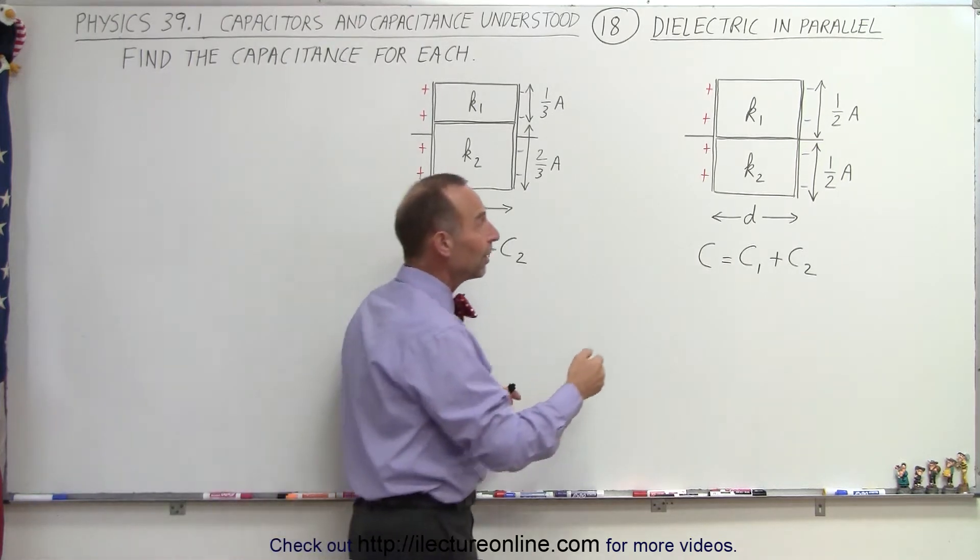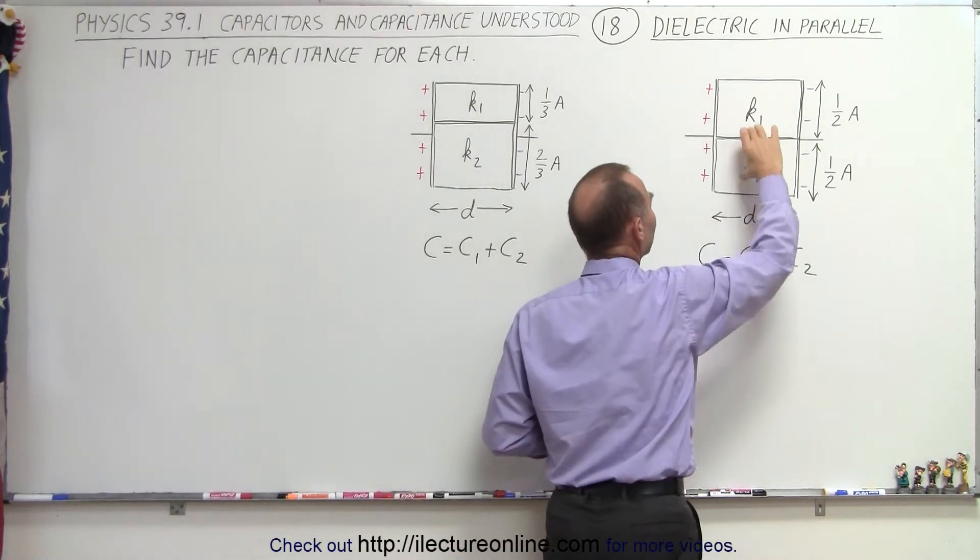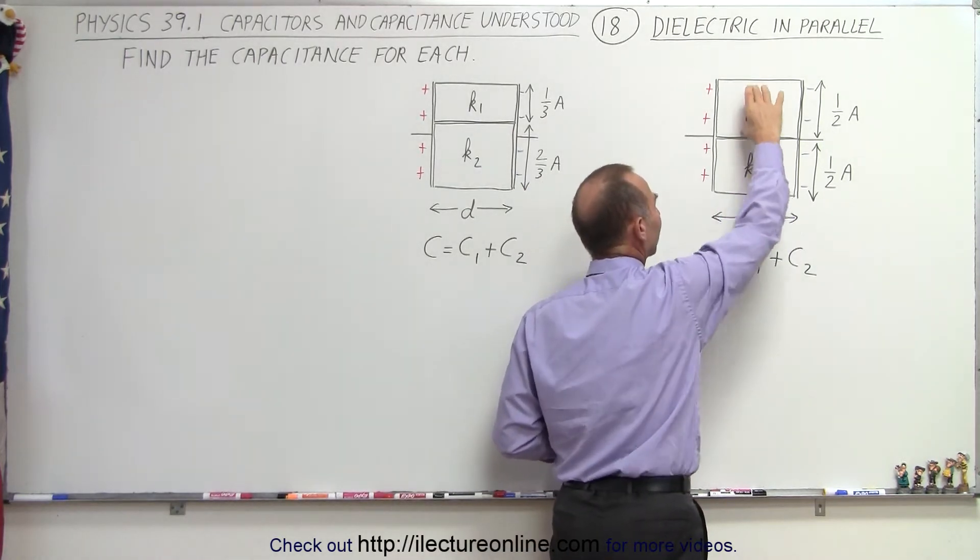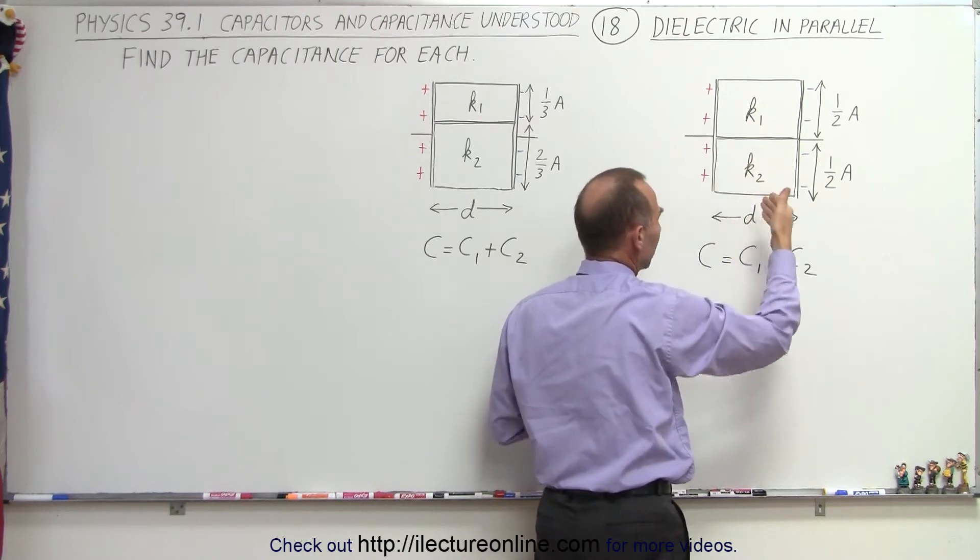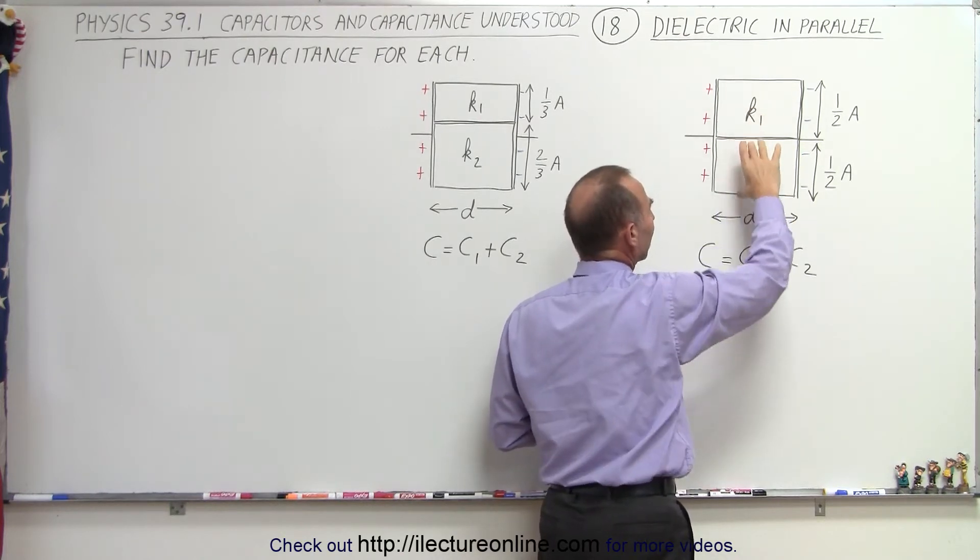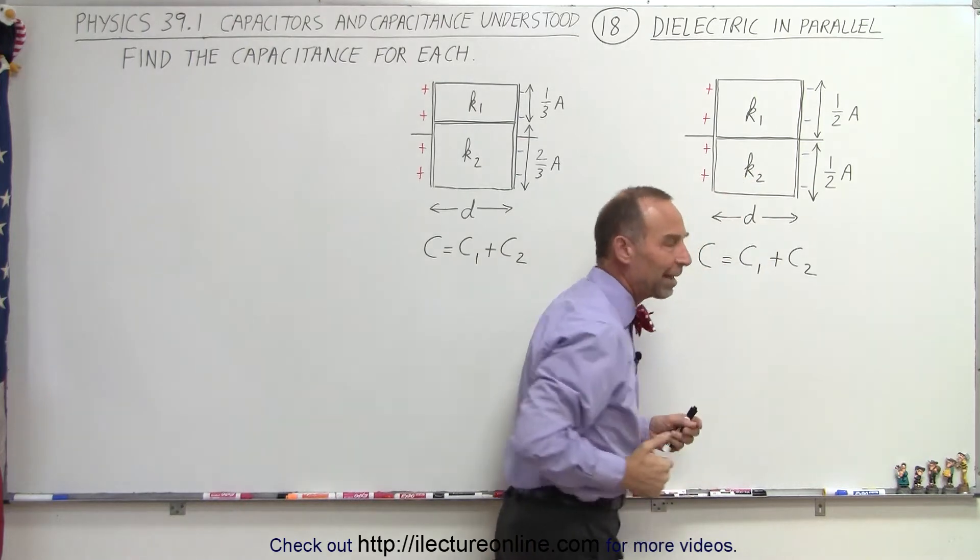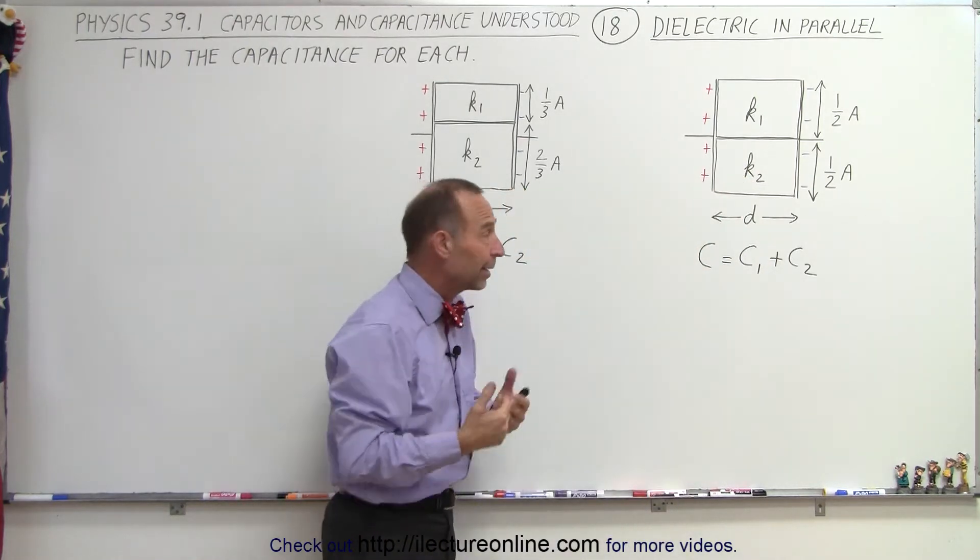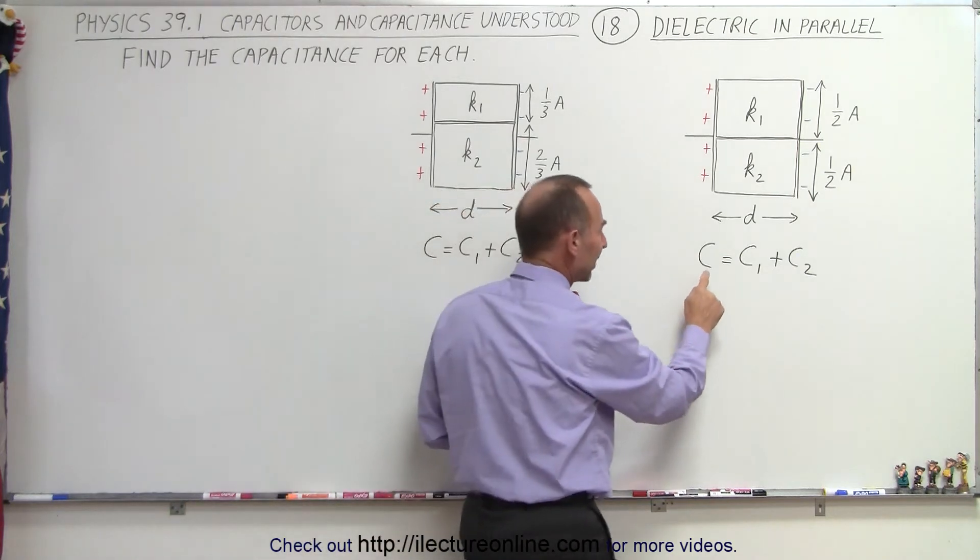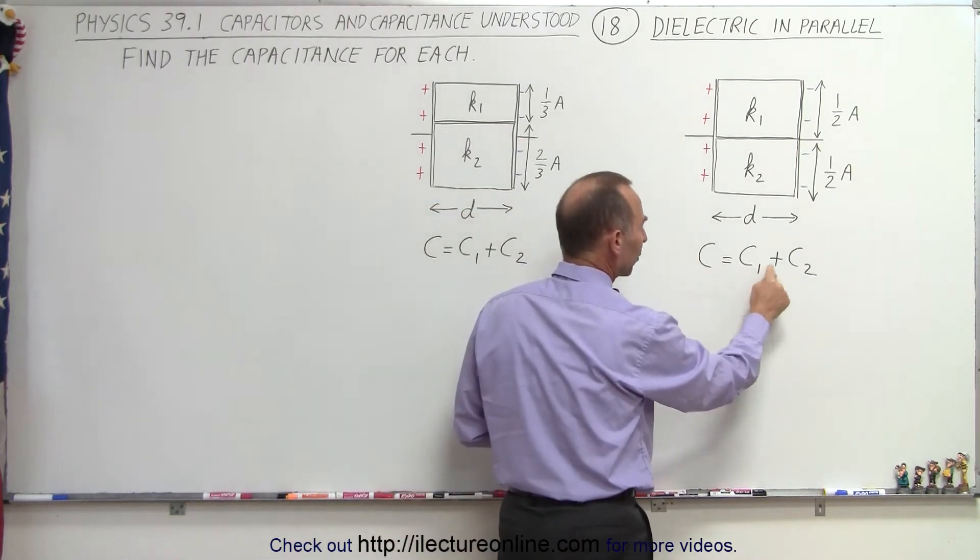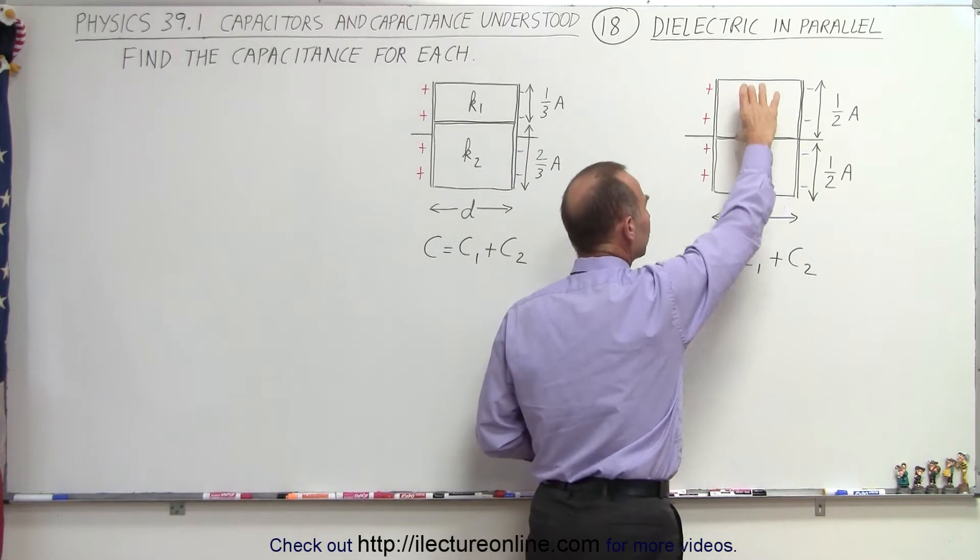Well in this case notice that we can almost take a look at this as being two capacitors side by side. We can actually separate them, connect them like this with a conductor, and you can then see that yes these are like two capacitors in parallel, and capacitors in parallel can simply add algebraically. So that's why we can say that the total capacitance is simply going to be the algebraic sum of the two pieces.